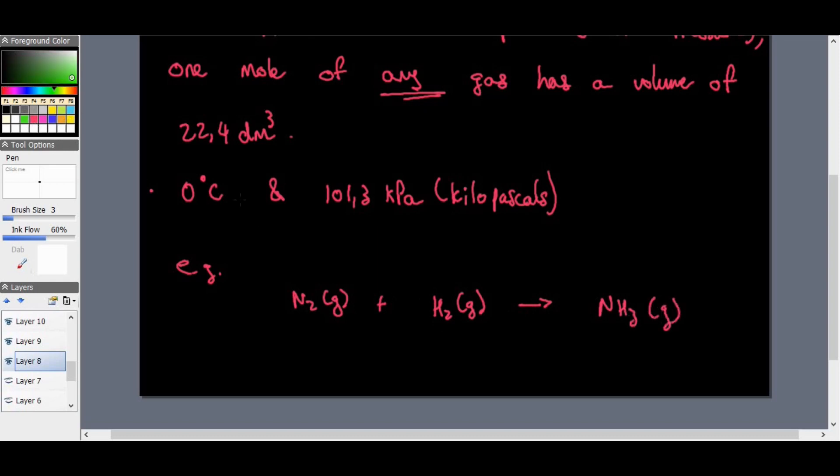Obviously, these are going to have balancing numbers now. So we obviously need to put a 2 in front here to balance the nitrogens and put a 3 in front here to balance the hydrogens. So it looks like we've got 1 mole, we've got 3 moles here, and we've got 2 moles there. So this is the mole ratio. So it looks like we've got 1 volume, which will be 22,4 decimetres cubed. Here we've got 3 volumes, which means we've got 67,2 decimetres cubed. And here we've got 2 volumes, so we've got about 44,8 decimetres cubed here.